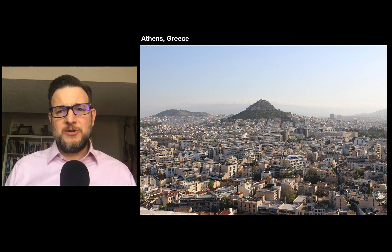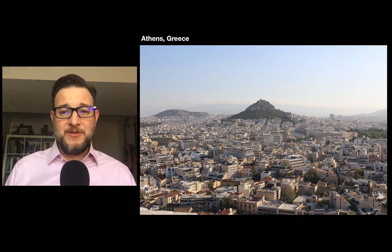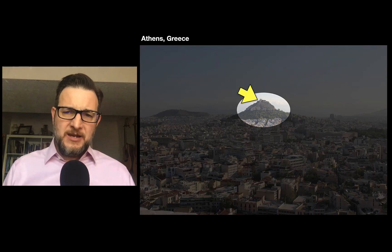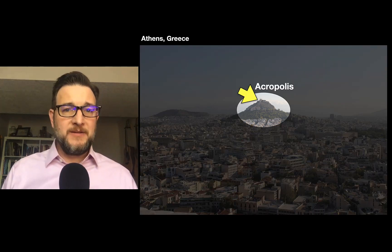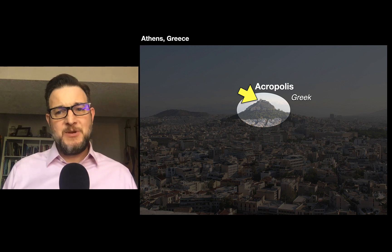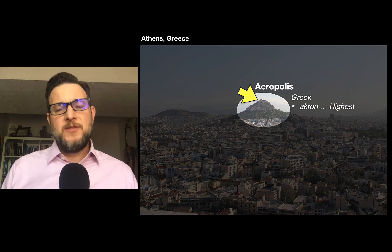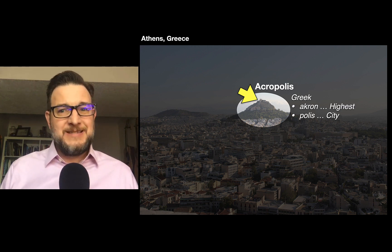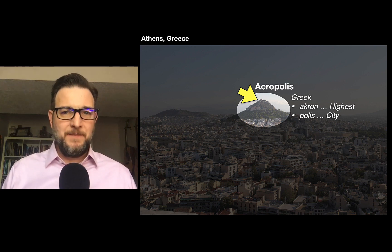To talk about the next structure, let's look at a picture of Athens in Greece, this beautiful ancient city. On the outskirts of the city is the Acropolis. It got its name because in Greek, the prefix 'akron' means highest or the summit, and 'polis' means city — basically meaning it's the highest part of the city.